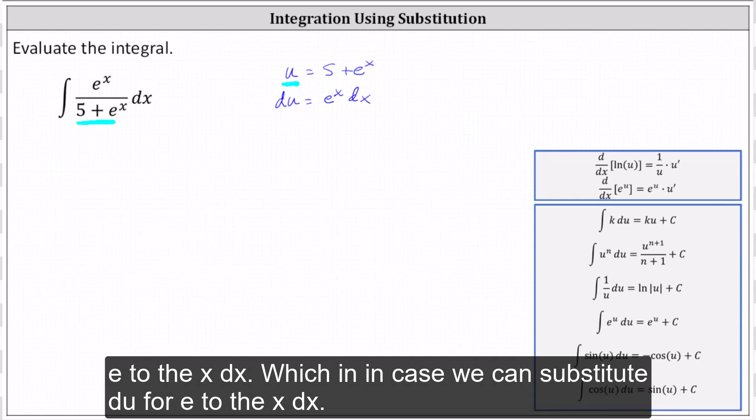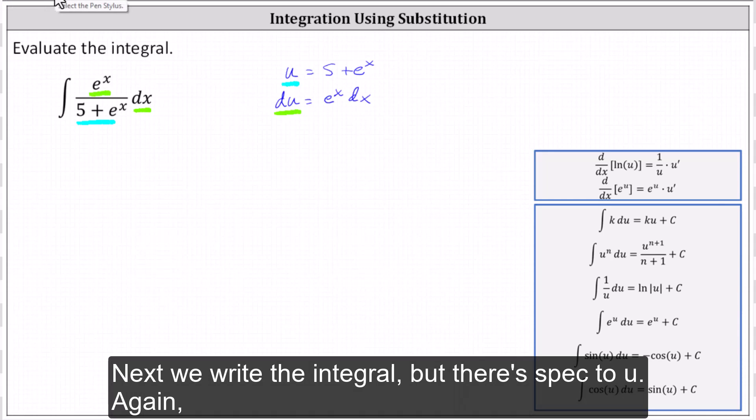Du equals e to the x dx, which indicates we can substitute du, and substitute u for the denominator of 5 plus e to the x. Next, we write the integral with respect to u.